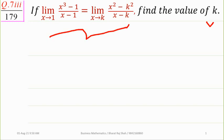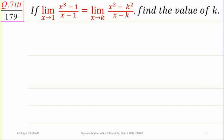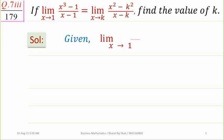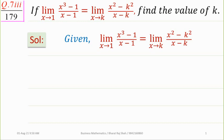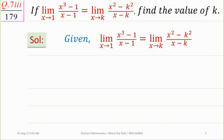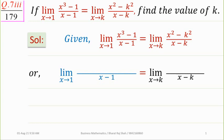What we need to do is first find the limit of the left-hand side, and then find the value of k. On the LHS, nothing is missing — everything is given — and that's why we can find the limiting value on the LHS. Let's do this; the solution is very simple.